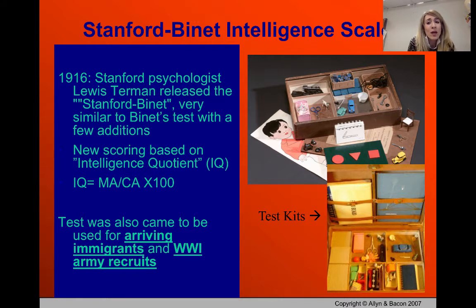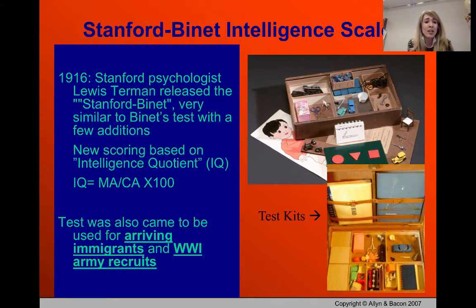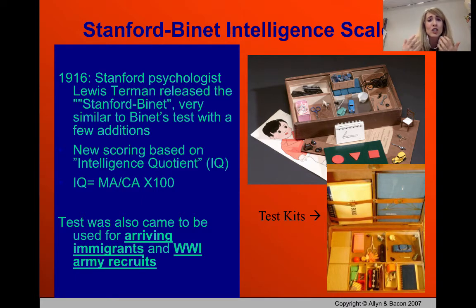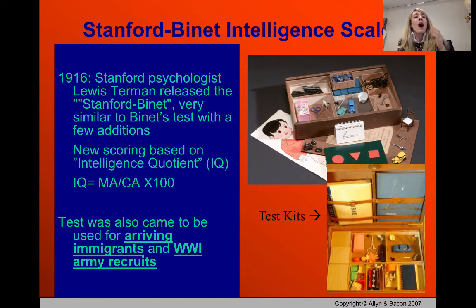The problem with this formula is that it doesn't work for adults. At some point a person keeps getting older but their IQ isn't going to keep improving — so your chronological age keeps rising while mental age plateaus, making it seem like you're getting less intelligent over time. This test was also eventually used for arriving immigrants and World War I army recruits.